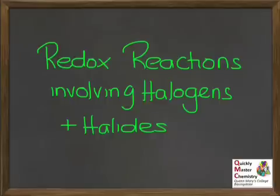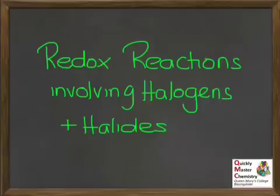You should be able to write half equations and describe these as oxidation or reduction as appropriate. You also need to be able to talk about the oxidation of halide ions in electrolysis and give the half equation for what occurs at the positive electrode. With all of these reactions, you ought to be able to link what's going on with what you already know about the appearance of halogens and their solutions, and make predictions about the observations that you would see.